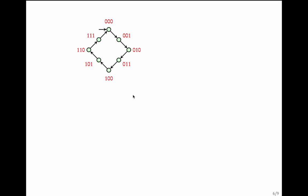Let us now look at a ring with eight states. Since there are eight states you need three bits: 0 0 0, 0 0 1, 0 1 0, 0 1 1, 1 0 0, 1 0 1, 1 1 0, and 1 1 1. The transition relation will use variables x3, x2, x1 for the source and x3 prime, x2 prime, x1 prime for the target.